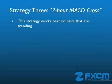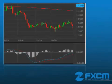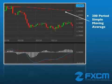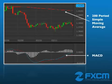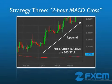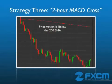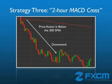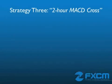Now let's take a look at our last strategy. In my opinion, this strategy works best on currency pairs that are trending. For this example, we're going to pull up a two-hour pound-dollar chart and apply two technical indicators: a 200-period simple moving average, which helps me locate the direction of the trend, and a MACD, which is designed to identify trend changes. If the price action is above the 200-period moving average, the pair is in an uptrend. If the price action is below the 200-period moving average, the pair is in a downtrend.